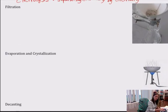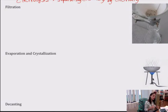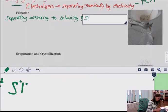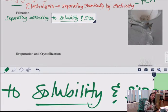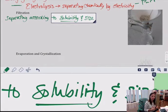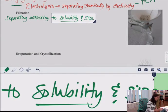Filtration is probably the most well-known and easiest method. You are separating according to solubility and size. Solubility means you're separating based on whether or not something can dissolve in something else — one substance should dissolve and one will not. If something is insoluble, it doesn't dissolve; if something is soluble, it does dissolve.